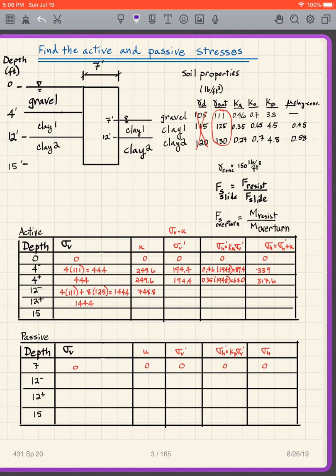And we have our soil properties here. If you notice we have dry unit weight, saturated unit weight, kA, k0, kp. And then we have the coefficient of friction between clay and concrete. But right now I just want you to find the active and passive stresses.